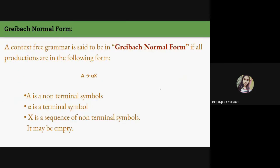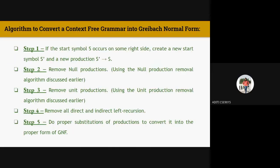Now let's see what Greibach Normal Form is. GNF is a representation of a context-free grammar in which every production rule is of the form A → αX, where A is a non-terminal symbol, α is a terminal symbol, and X is a (possibly empty) sequence of non-terminal symbols. We will now discuss the steps to convert a CFG to Greibach Normal Form.